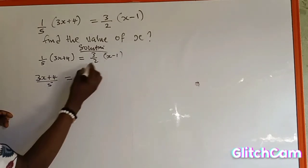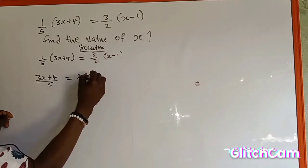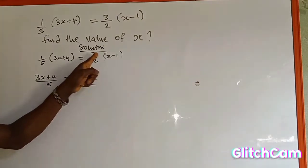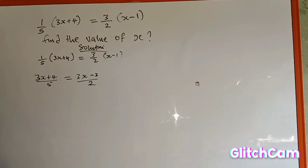3s plus 4 over 5, which is equal to 3 multiplied by this. I have 3s, then 3 multiplied by minus 1 is minus 3, everything over 2. I use this 3 to open this bracket, then use this one to open bracket. The next is to cross